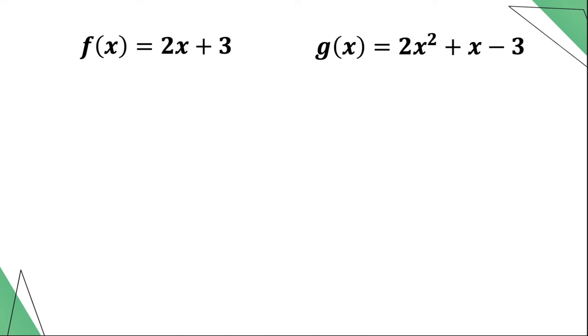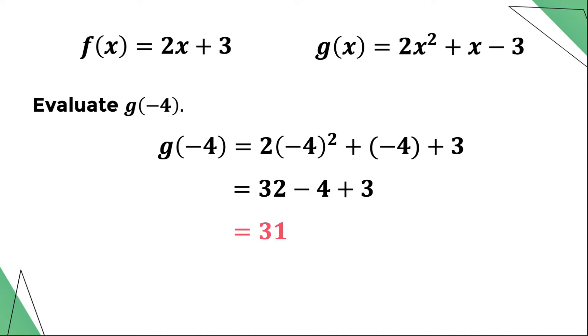For our second example, we're going to use the same functions f and g. Let us evaluate g(-4). This means that we're going to substitute negative 4 to the x's of function g. Replacing all the x's with negative 4 and performing the indicated operations, the value of g(-4) is positive 31.